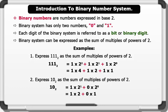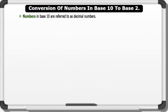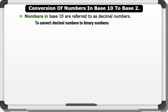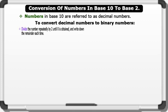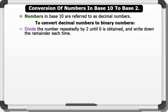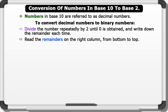Wow, that's very good! Now let's convert numbers from Base 10 to Base 2. Numbers in Base 10 are referred to as decimal numbers. To convert decimal numbers to binary numbers: 1. Divide the number repeatedly by 2 until 0 is obtained, and write down the remainder each time. 2. Read the remainders in the right column from bottom to top.